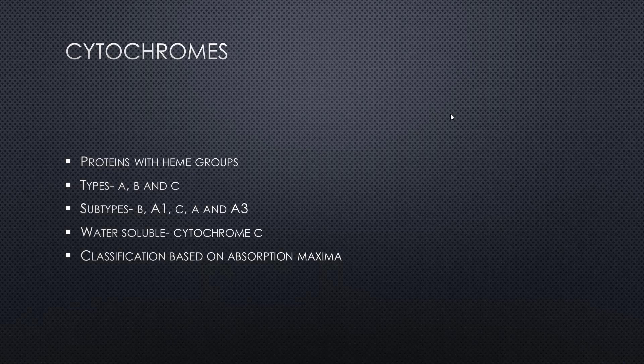They have been classified and demarcated on the criterion of the absorption maxima — how much wavelength of light they absorb maximally. There have been various subtypes of cytochromes like cytochrome B, A1, C, A, and A3.